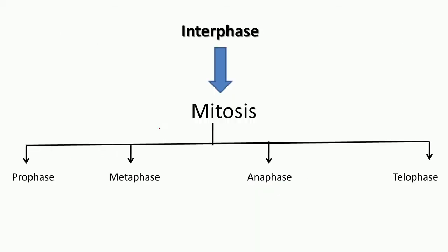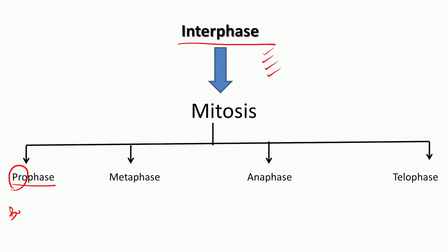So what is mitosis and how is it divided? Mitosis follows right after interphase, provided all the processes have been checked and the cell is convinced that everything is in order to undergo mitosis. Mitosis is divided into four major phases: prophase — 'pro' meaning before, so you can take it as the first step — metaphase, anaphase, and telophase.